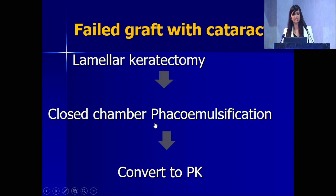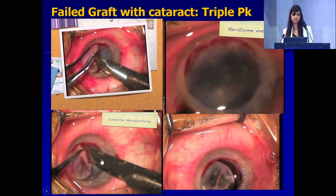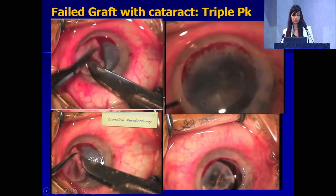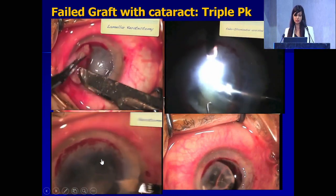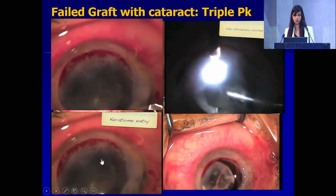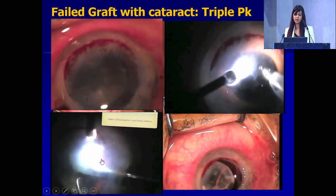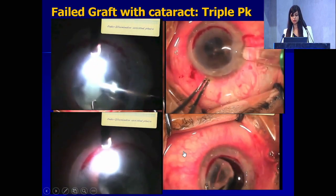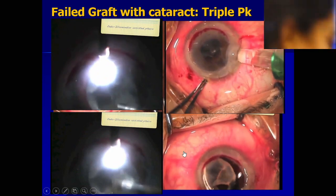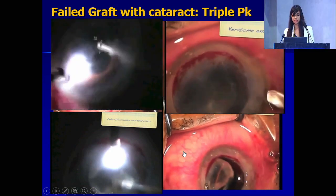For a patient with a failed graft and cataract, open-sky surgery is a big issue. What you can do instead is do a partial thickness dissection, remove the stroma, perform the cataract surgery, and then remove the tissue and do a full-thickness graft. This is always better than doing an open-sky surgery.